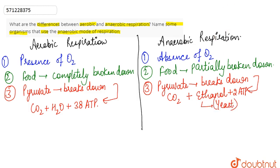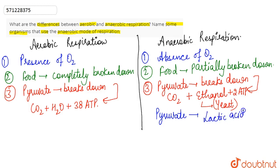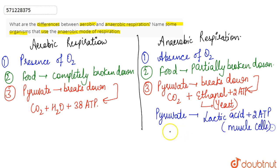Whereas when pyruvate breaks down in muscle cells, it forms lactic acid and two molecules of ATP. So in muscle cells, anaerobic respiration produces lactic acid rather than ethanol.